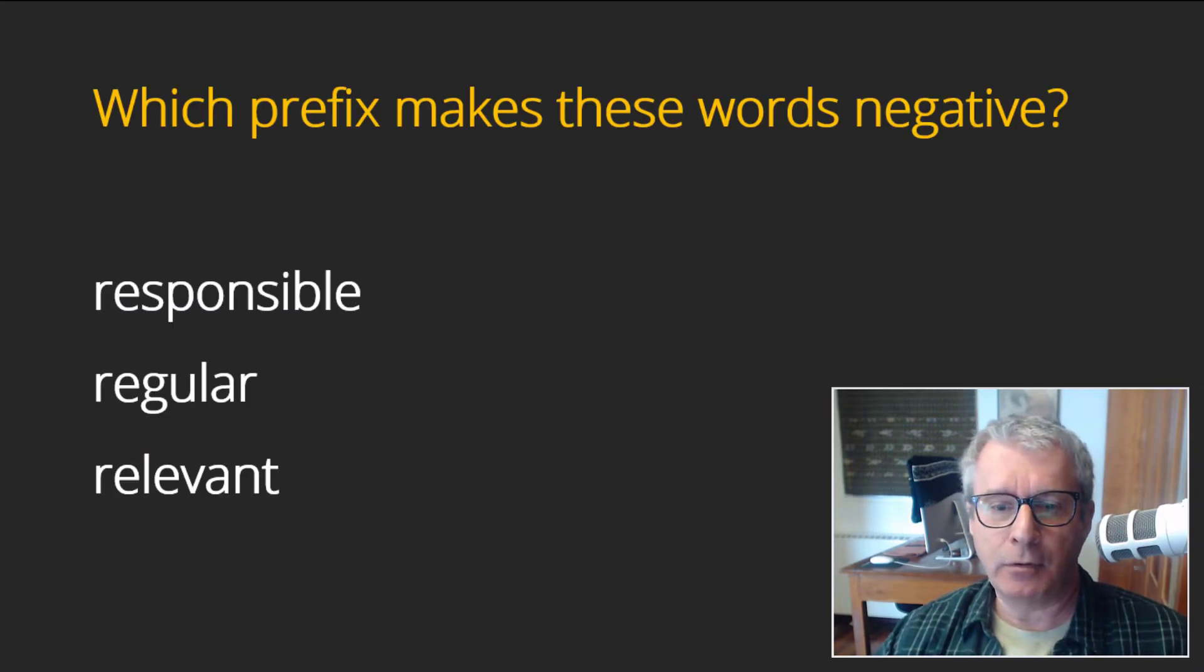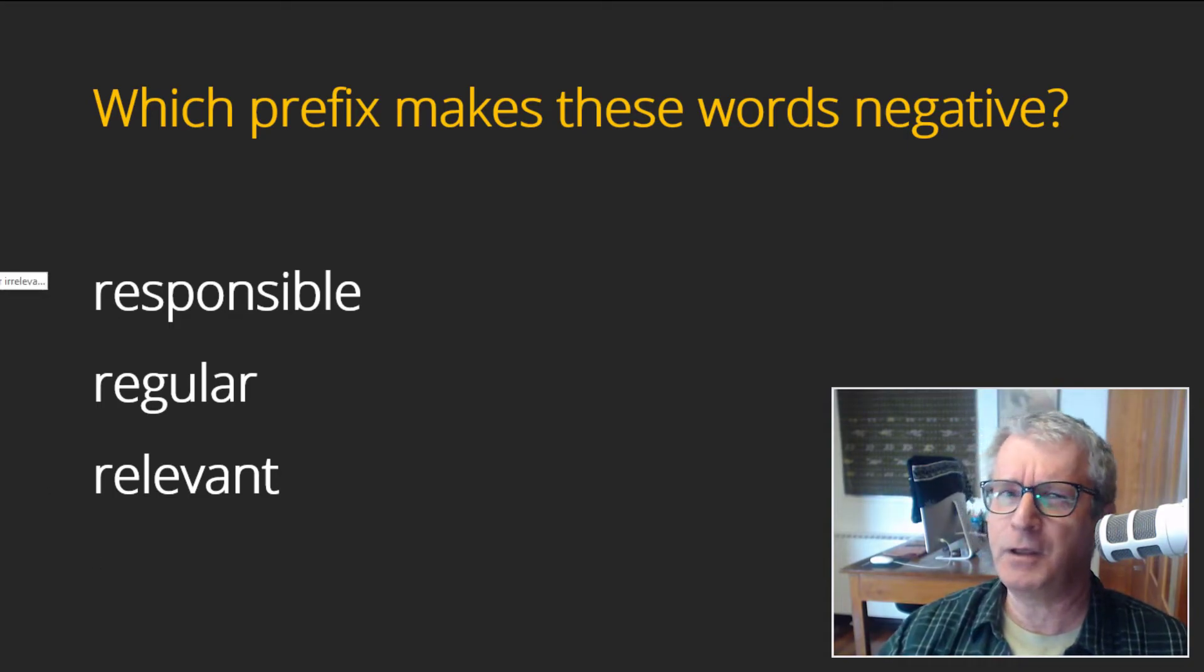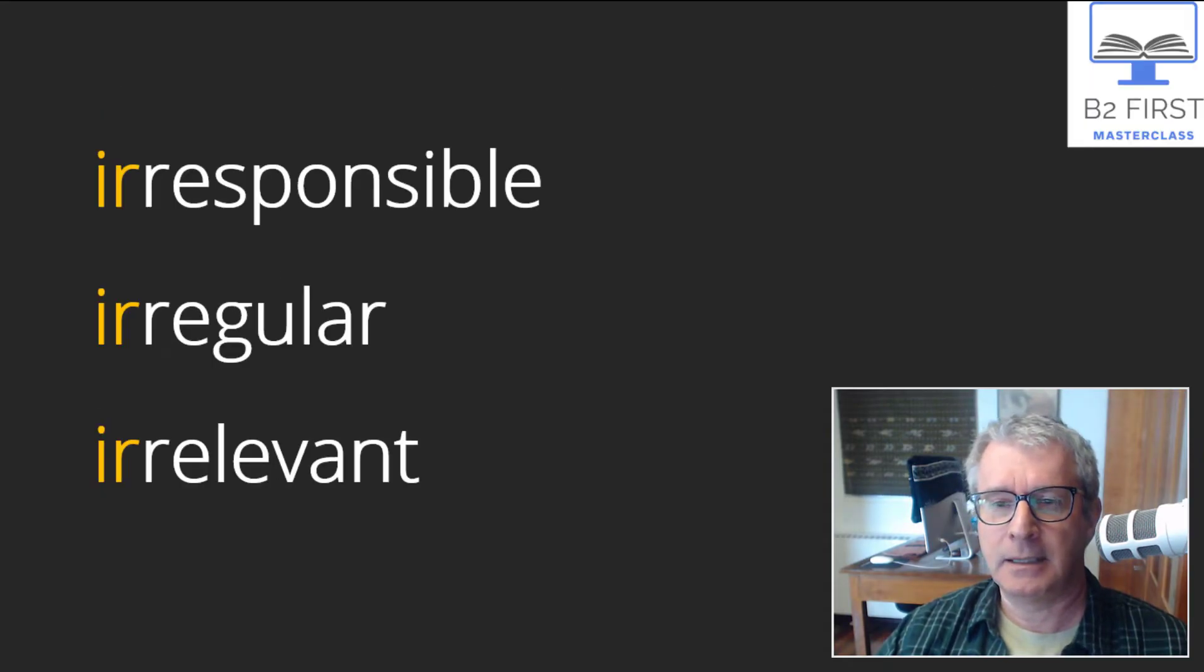Okay, let's do three more: responsible, regular, and relevant. Are you a responsible person? Regular—it's a regular show on TV, it's every week. And relevant—is this exercise relevant for you? Is it useful, is it helpful? The prefix you need to make these adjectives negative is 'ir-.' Again, notice the double R at the beginning: irresponsible, irregular, and irrelevant. It's an irrelevant fact. Why are you telling me this? It's not important, it's irrelevant.